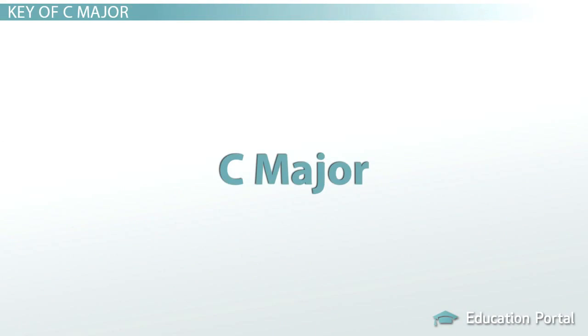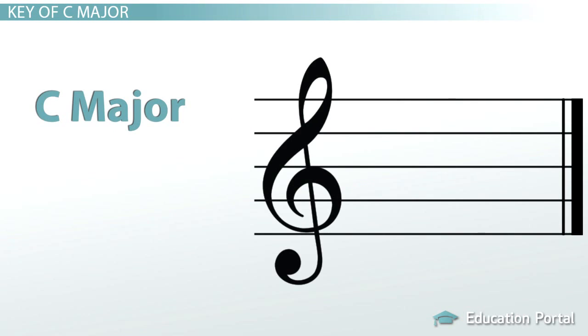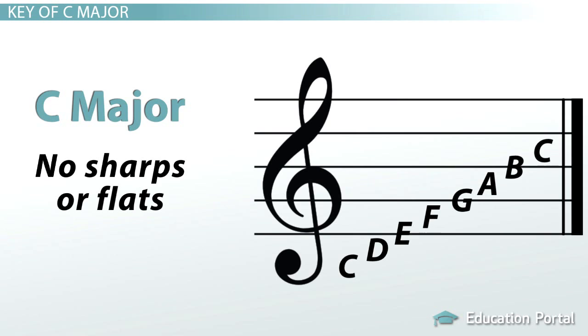The easiest example of key and key signature is C major. C major is every musician's favorite key because it has no sharps or flats. So the notes used are C, D, E, F, G, A, B, C, and C is the tonic because it is the note that everything is centered around.